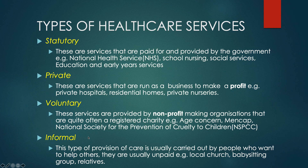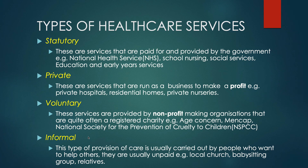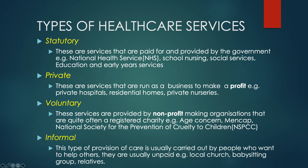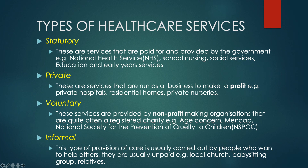Then we have informal delivery. This is a type of provision of care usually carried out by people who just want to help others — usually unpaid and not for profit, just because they want to. For instance: local churches, mosques, temples, babysitting groups, relatives. There have been times when people have had their babies delivered by their mom or their husband — at that point they were offering a health and social care service but in an informal setting. Local churches can serve as school nurseries and provide education, doing things that statutory services would do but on an informal basis.